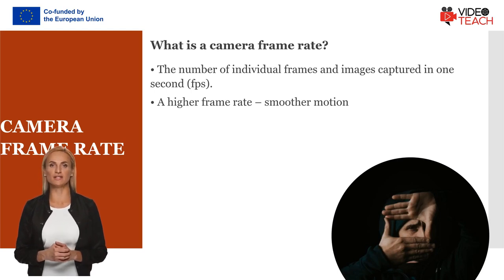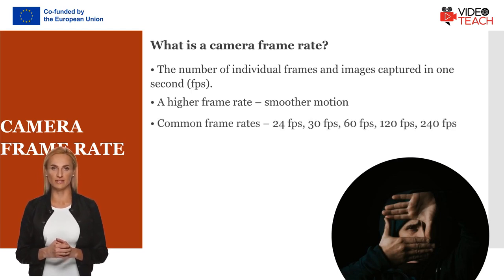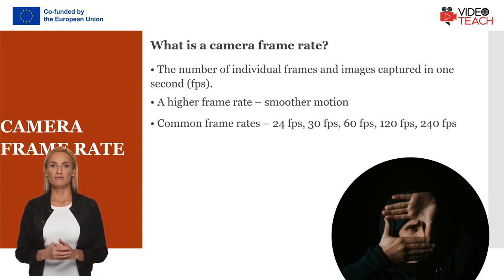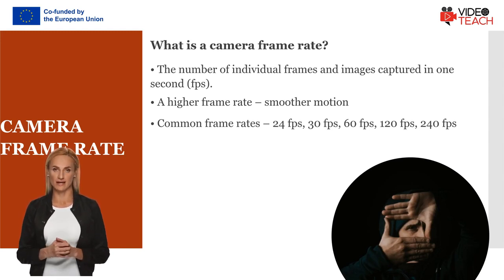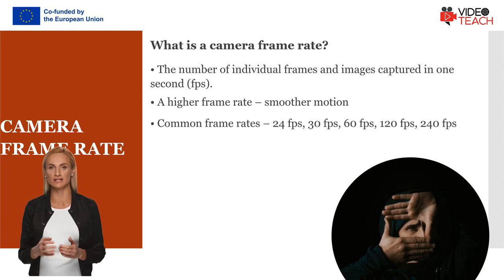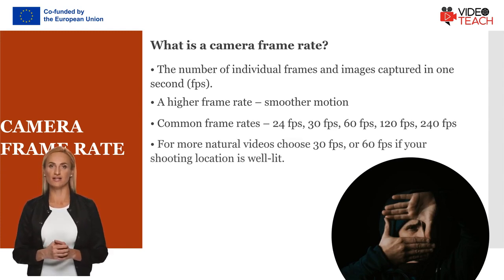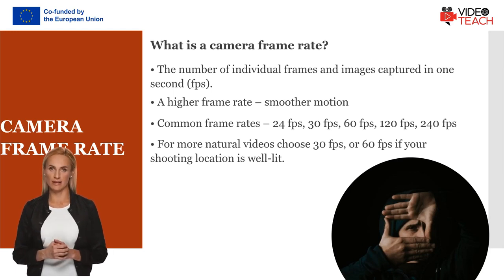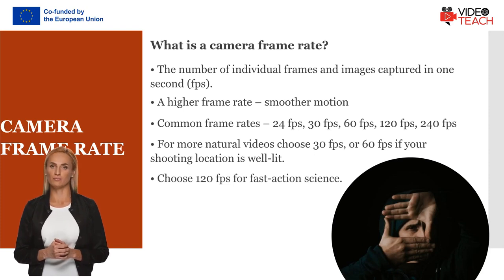Most common cameras or phone cameras offer 24, 30, or 60 frames per second, while some more sophisticated cameras may also have 120 and 240 frames per second. For a more natural look on your teaching videos, choose 30 fps or 60 fps if your shooting location is well lit. Choose 120 fps if you are recording fast action scenes.